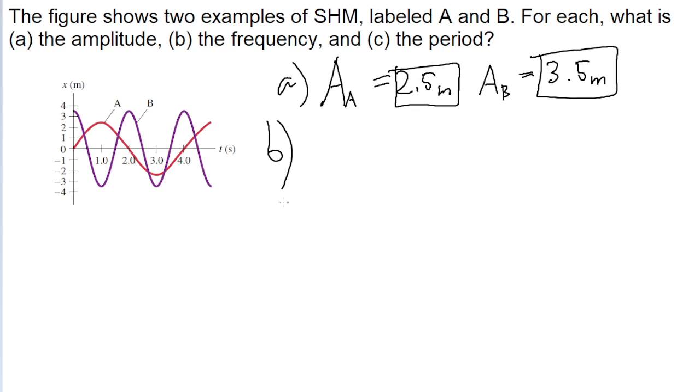So function A completes one cycle every 4 seconds. The frequency for A is going to be 1 divided by 4, or one fourth, which is 0.25 hertz.